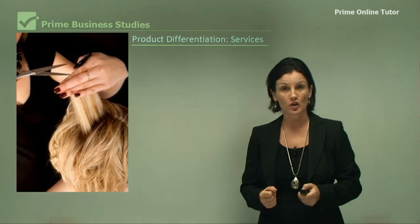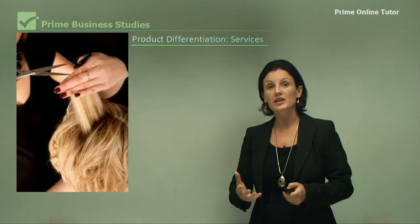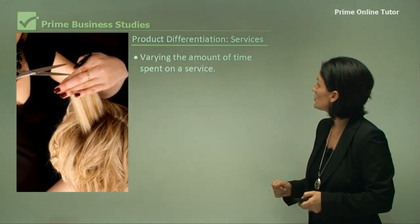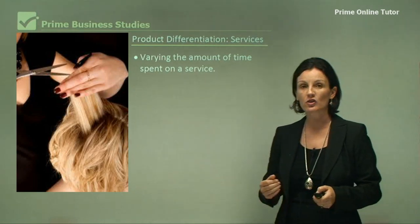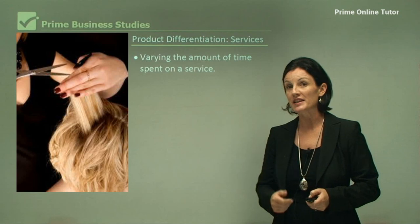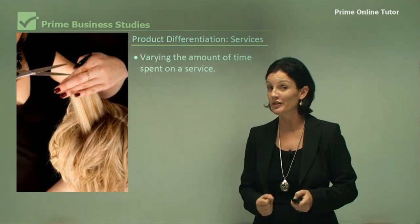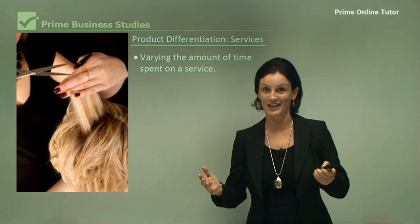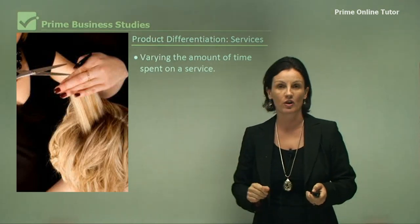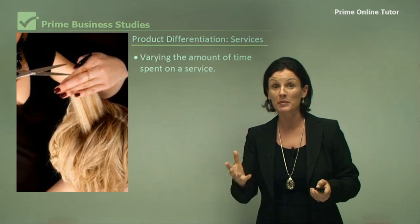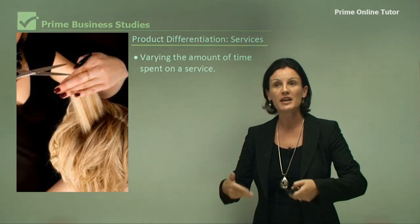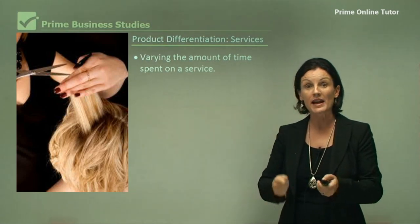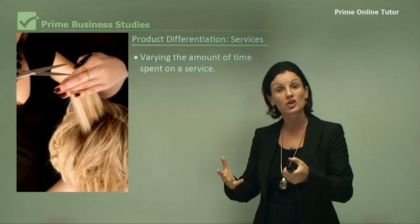Now let's have a look at services. When a business wants to differentiate their service, there are different strategies. The first one is they may vary the amount of time spent on a service. Some people are prepared to pay $20 for their haircut and others are prepared to pay $160. If people are prepared to pay $160, then I might offer them tea, coffee, wine, I might massage their hair, and I may consult them through magazines about their haircut.